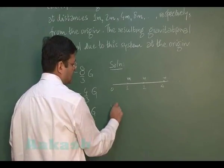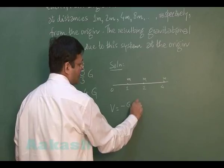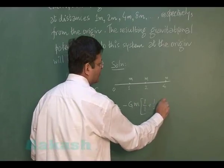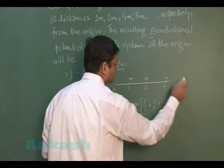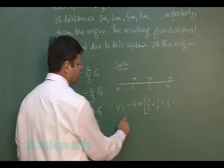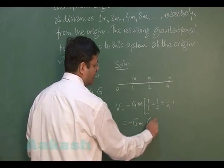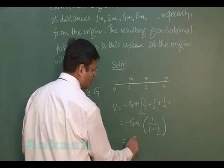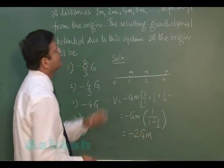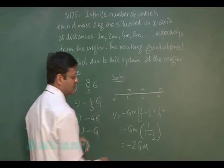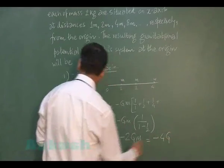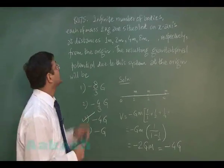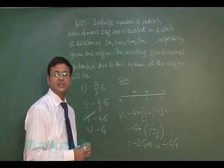The gravitational potential is: minus Gm (1/1 + 1/2 + 1/4 + ...) up to infinity. This is a geometric series with first term 1 and common ratio 1/2, so the sum = 1/(1 - 1/2) = 2, giving minus 2Gm. With mass m = 2 kg, the answer is minus 4G, and the most appropriate answer is the third option for question 175.